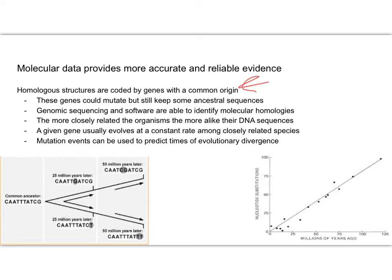Homologous structures are one of our evidences of evolution. They show that link to a common ancestor. These genes can still mutate, but keep a lot of the ancestral sequence. When you sequence the genome using software, you can start to identify these molecular homologies.